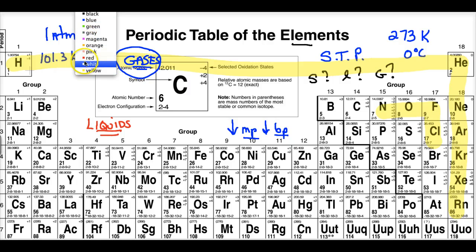So our liquids represent bromide and mercury. So those are our liquids.